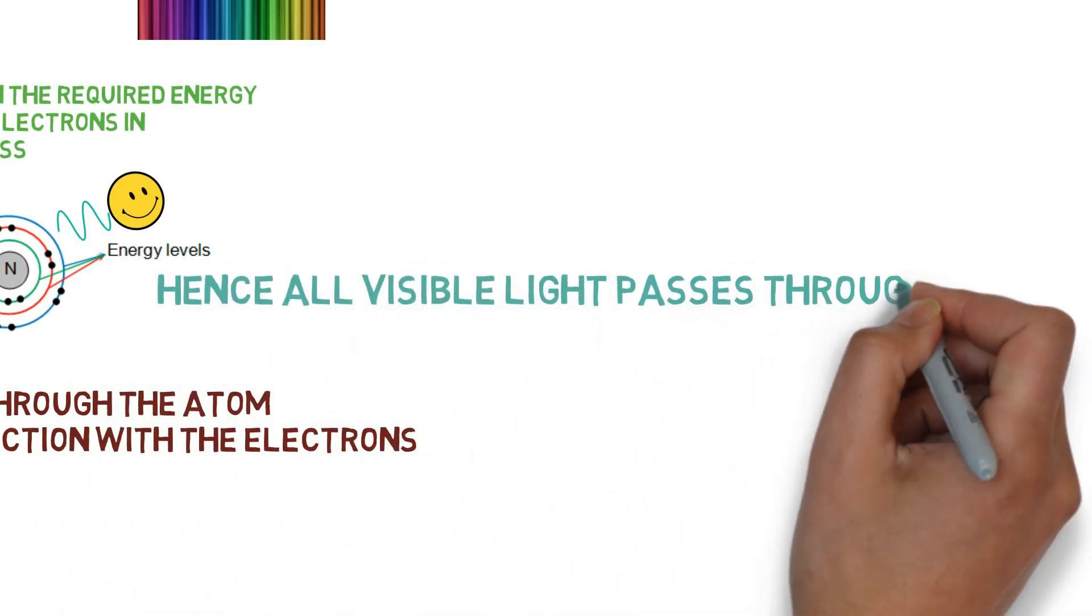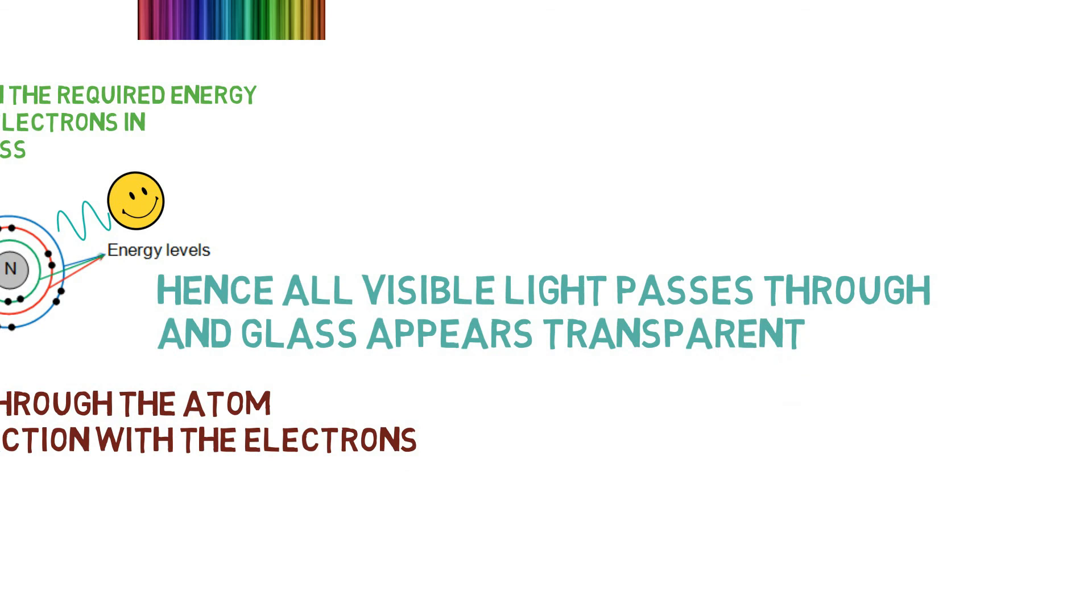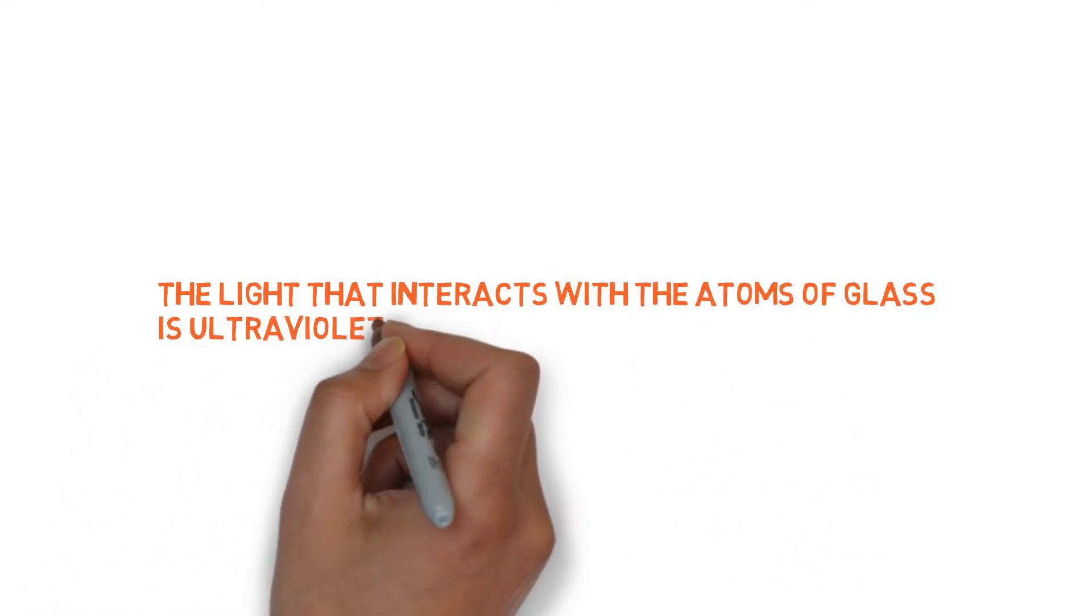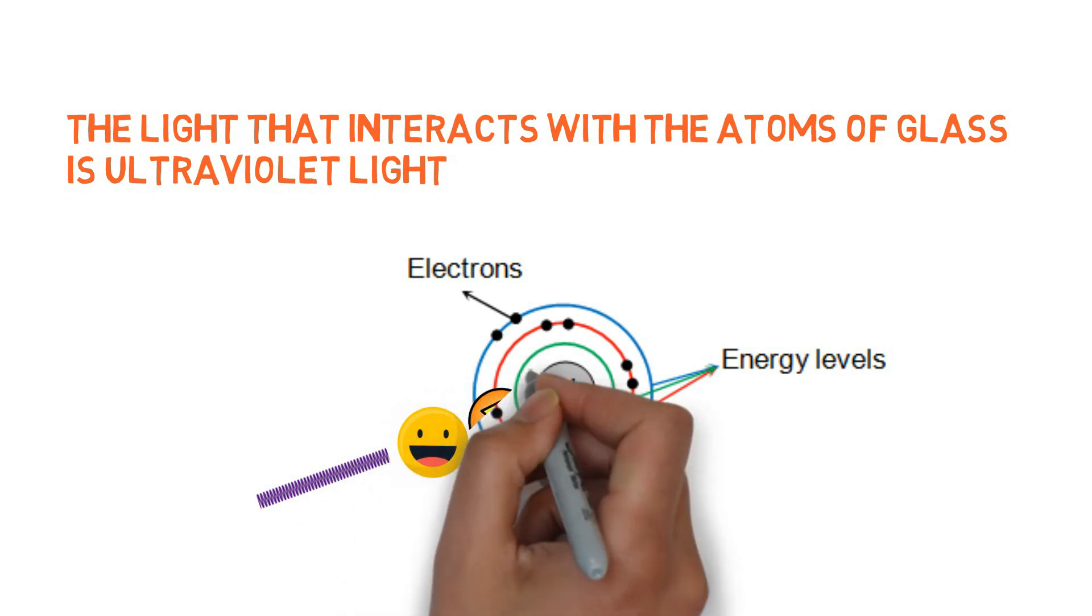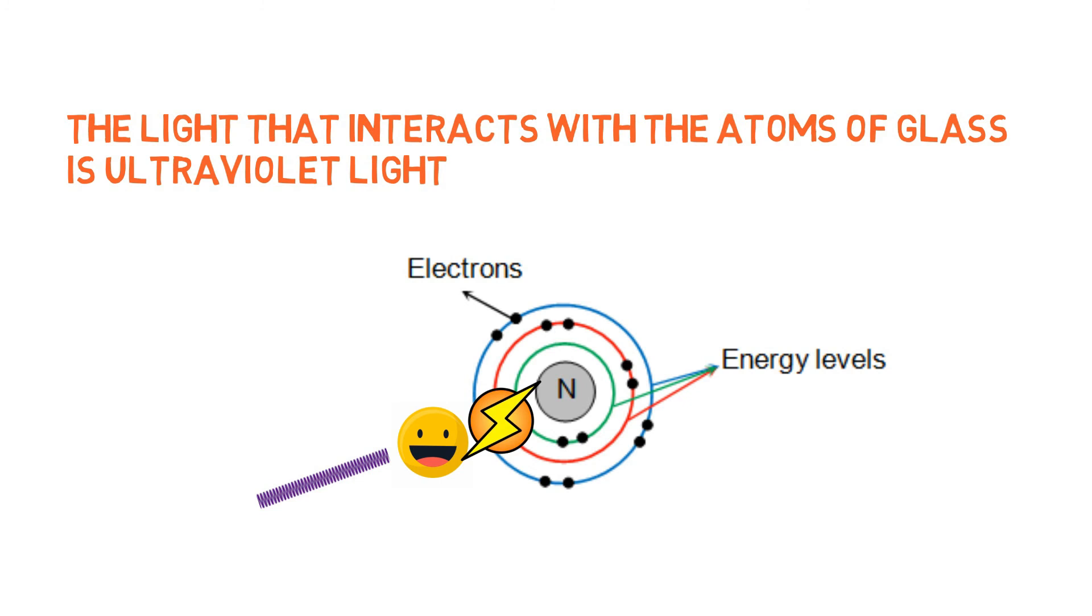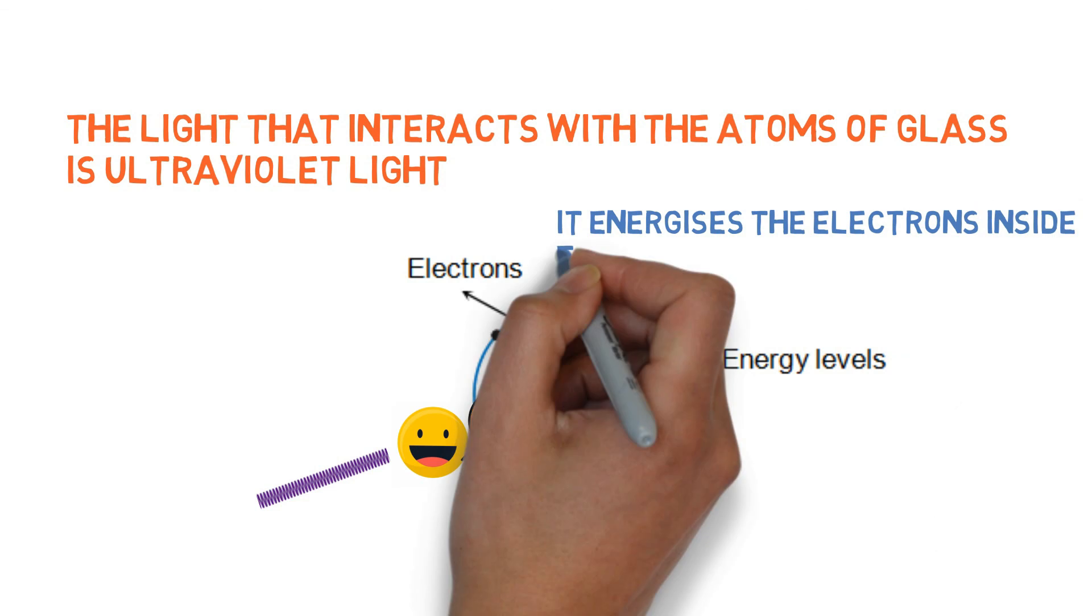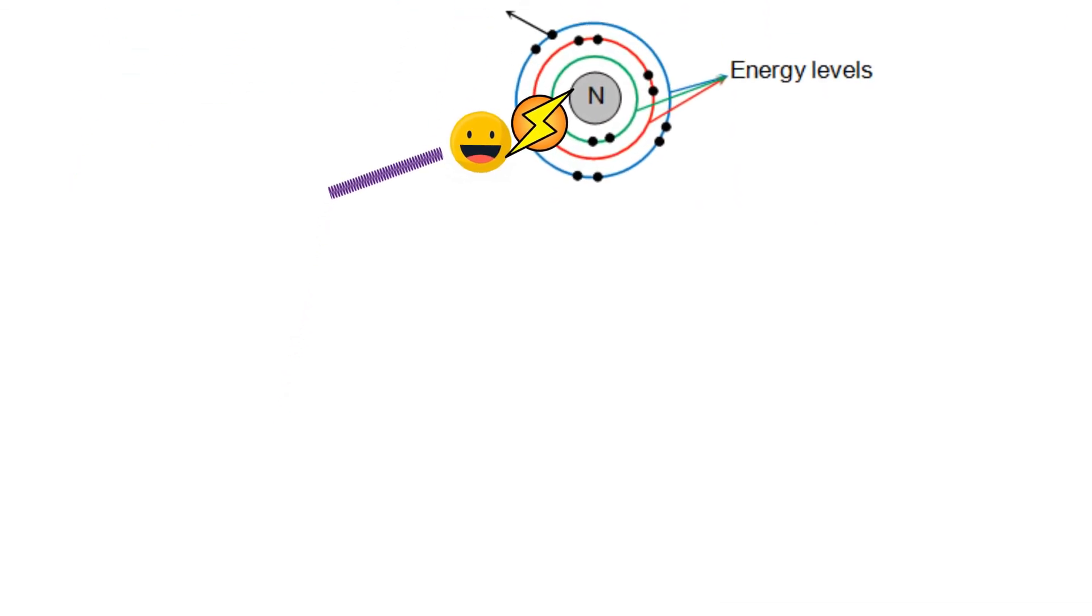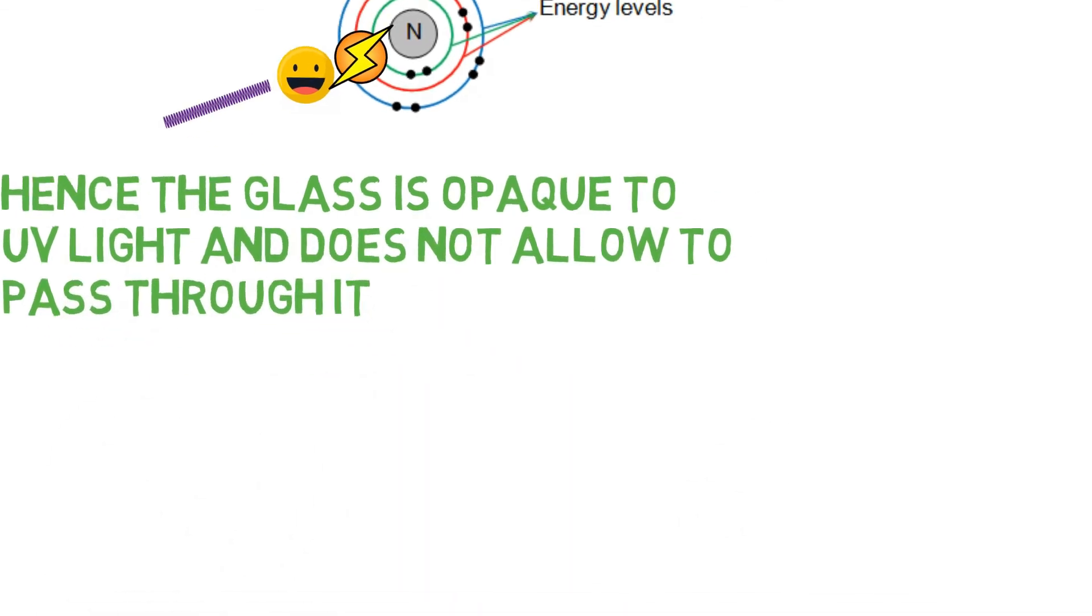Hence, all the visible light passes through the glass and it appears transparent. The light that interacts with the atom of glass is ultraviolet light.